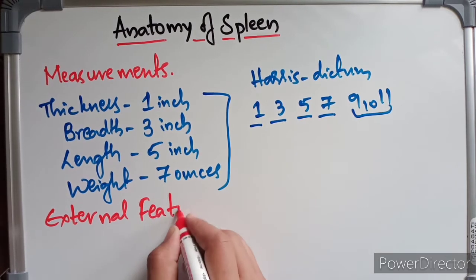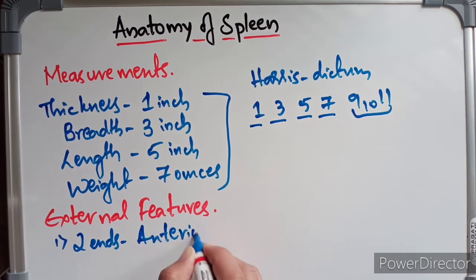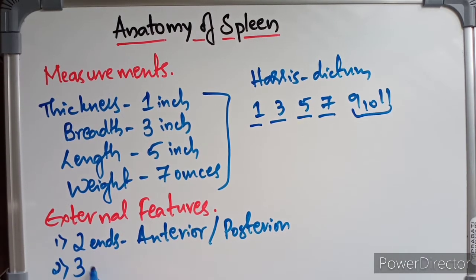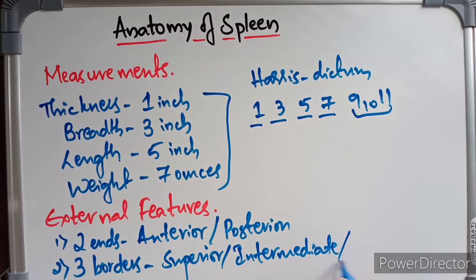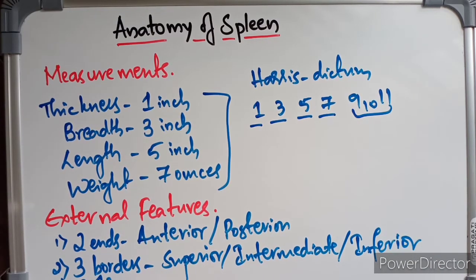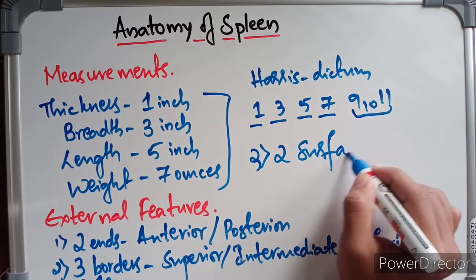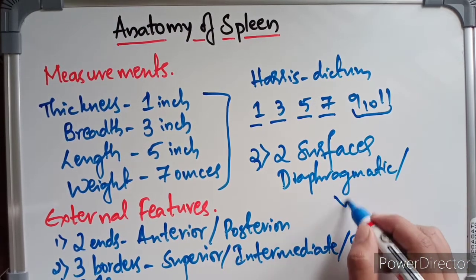Now, the external features of the spleen. The spleen presents with two ends: the anterior end and the posterior end. It has three borders: superior, intermediate, and inferior border. It also presents with two surfaces: the diaphragmatic surface and the visceral surface.